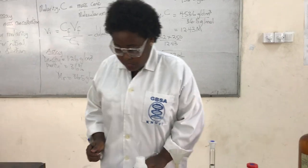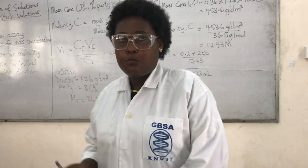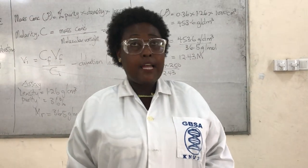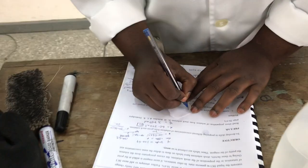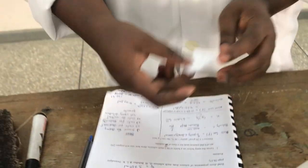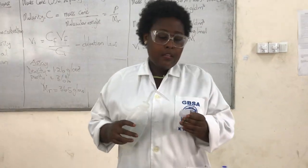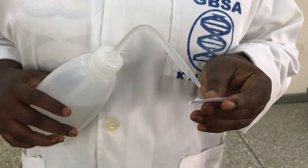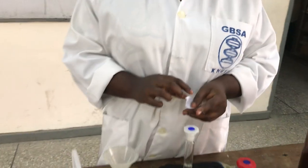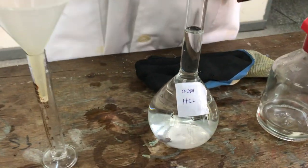We have prepared our solution — it's very simple! Now you must label it properly. Write the concentration on a small piece of paper: 0.2 molar HCl. Wet the paper with a small amount of water so it sticks on the volumetric flask. It is always important to label your solutions.